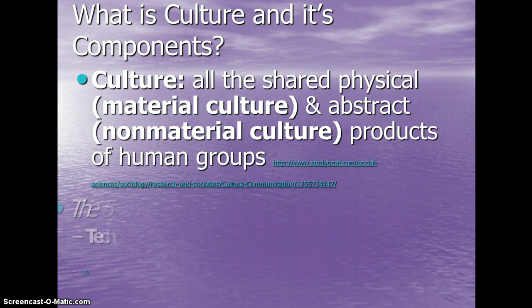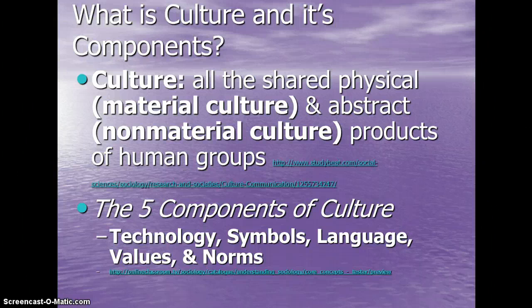What is culture and its components? Culture would be all the shared physical — or material culture — and abstract or non-material culture products of human groups. There are five components of culture: technology, symbols, language, values, and norms. Technology is different in different cultures and in different time periods — now we look at digital, computer, and phone technologies. Symbols would be like a peace sign or a smiley face — anything that symbolizes thoughts, feelings, or different abstract ideas.